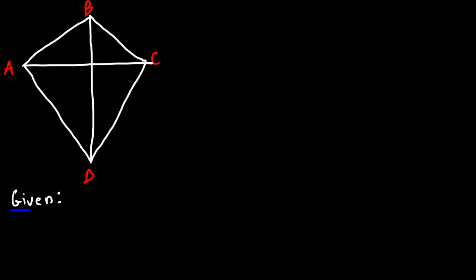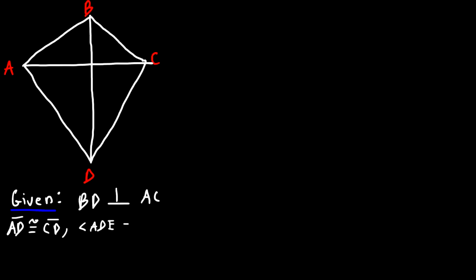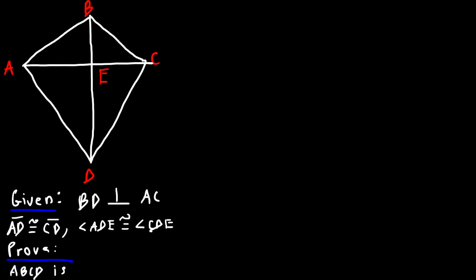In this example problem we're given that BD is perpendicular to AC, that AD is congruent to CD, and that angle ADE is congruent to angle CDE. We label the intersection point E. Our task is to prove that ABCD is a kite.